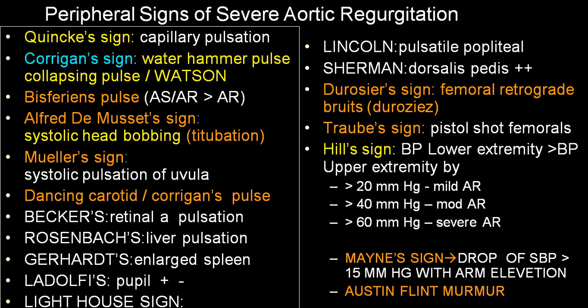Dancing carotid or Corrigan pulse is a prominent carotid pulsation seen in the neck — a very prominent carotid pulsation is called either dancing carotid or Corrigan pulse. Baker sign is retinal artery pulsation. Rosenbach sign is liver pulsation. Gerald sign is an enlarged spleen pulsation — the spleen is enlarged and you see pulsation.